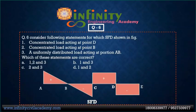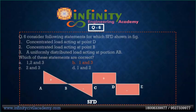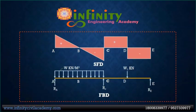Question 6: Consider the following statements for the SFD shown in the figure — statement 1: concentrated load acting at point D; statement 2: concentrated load acting at point V; statement 3: uniformly distributed load acting on portion AB. Option B is correct — statements 1 and 3 are correct. In the SFD, at point A the line goes to the positive side, indicating an upward vertical force. From A to C there is an inclined line forming a triangle, indicating a UDL. From C to D there is a straight line, indicating no force in that span.